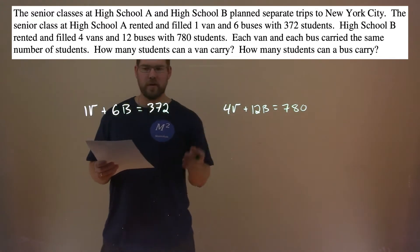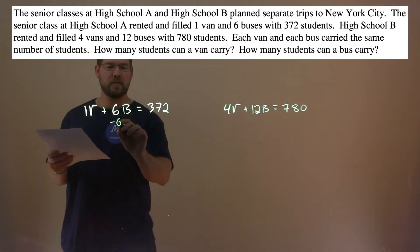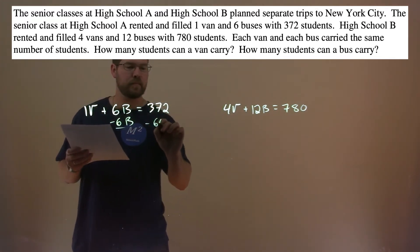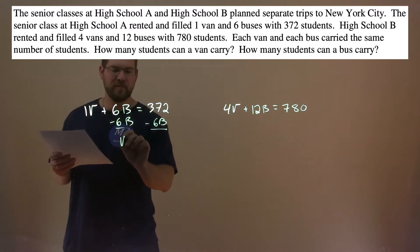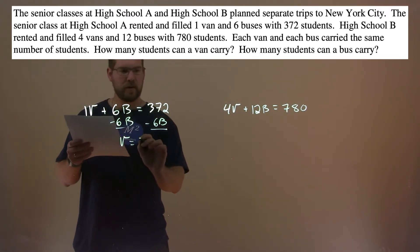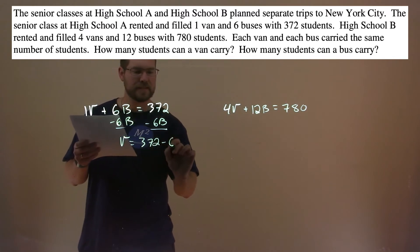Okay, so now we want to solve for our variables. Well, here I can just subtract 6B from both sides. And very quickly, V is 372 minus 6B.